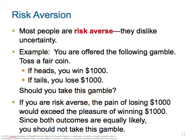Let's talk about risk aversion. When you have investments, most people are risk-averse — they dislike uncertainty. For example, if you're offered the following gamble: toss a fair coin; if it's heads, you win $1,000; if it's tails, you lose $1,000 — should you take this gamble? If you're risk-averse, the pain of losing $1,000 would exceed the pleasure of winning $1,000. Since both outcomes are equally likely, you should not take this gamble. That's risk aversion.